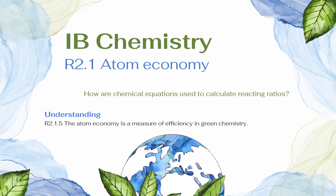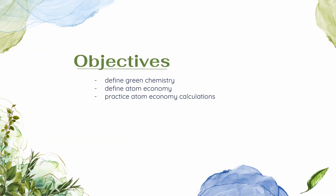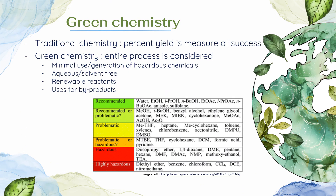Hello friends and welcome to a super quick video lecture on topic R2.1, more amounts of chemical changes. We're going to focus just on atom economy today. Our guiding question is how are chemical equations used to calculate reacting ratios? We're going to focus on this one understanding: atom economy is a measure of efficiency in green chemistry. Our objectives are to talk about what green chemistry is and then focus on atom economy — define it and practice some calculations.